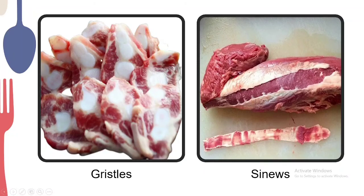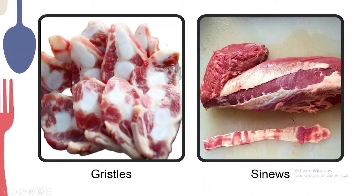Gristle is the white cartilage-like tissue beside the bone — it is tough and cannot be softened no matter what we do, as it falls under elastin from our earlier discussion on meat composition. We also have sinews, also known as silver skin, which is what butchers at the market remove. This also cannot be softened no matter how long you try to tenderize it, so it is very important to remove it when trimming the meat.